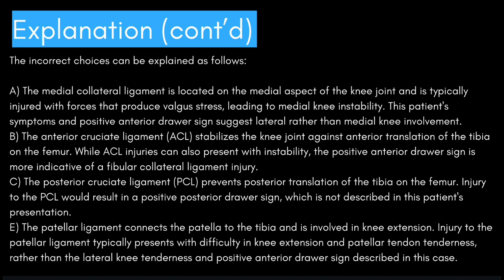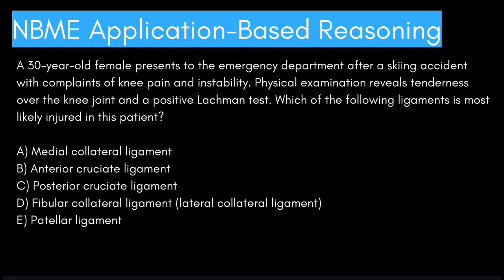The posterior cruciate ligament prevents posterior translation of the tibia on the femur; injury to the PCL would result in a positive posterior drawer sign, which is not described in this patient's presentation. The patellar ligament connects the patella to the tibia and is involved in knee extension; injury to the patellar ligament typically presents with difficulty in knee extension and patellar tendon tenderness, rather than the lateral knee tenderness and positive anterior drawer sign described in this case.